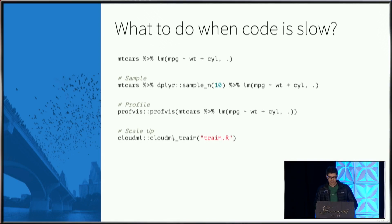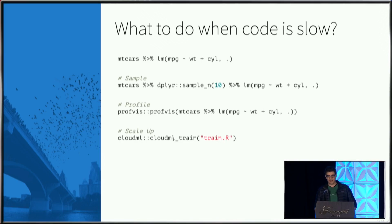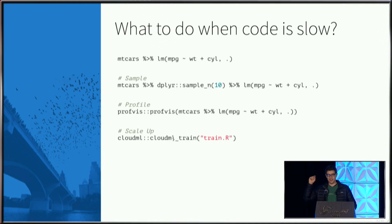The next solution is scaling up — you get bigger machines, as Joe presented and as Darby mentioned in the previous session. One great way of scaling up is: if I have a bigger machine somewhere, we can use RStudio Pro's job launcher to run that particular instance on a machine with more resources.